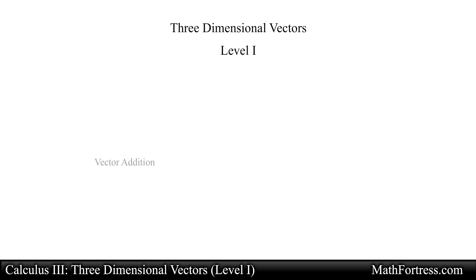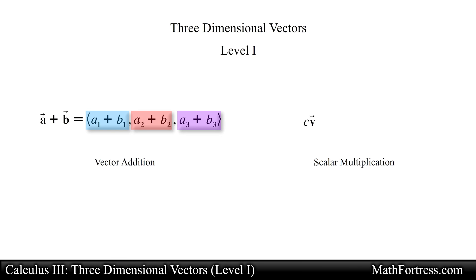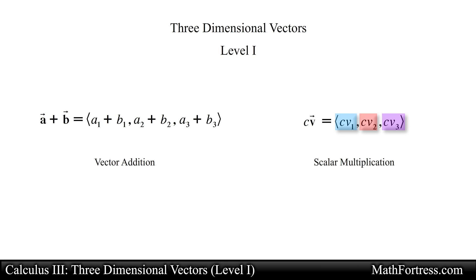The properties of vector addition and scalar multiplication given for planar vectors are also valid for vectors in space. For vector addition we simply add the vectors component-wise, and when multiplying a scalar by a vector we simply multiply that scalar to each of the vector's components.